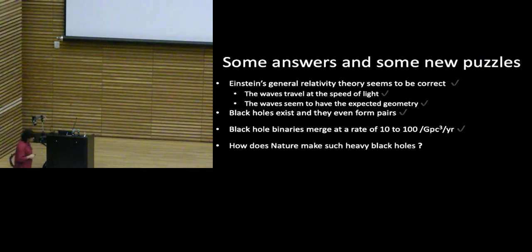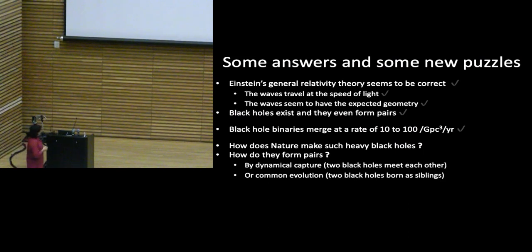We know that Einstein's theory seems to be correct. We know that the waves seem to travel at the speed of light. And the waves seem to have the expected geometry. These are some of the tests we've done with the set of signals we already have. Remarkably, black holes exist, and they even form pairs. We didn't know that to be true until we observed these black holes. We also are starting to get a handle on how often a pair of black holes will merge. And that's the number. It's 10 to 100 per cubic gigaparsec per year. So that's sort of just in a volume of the universe. Now we have some questions. How does nature make such heavy black holes? We don't fully know the answer to that. How do they form pairs? We don't even know the answer to that.